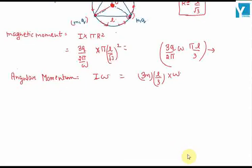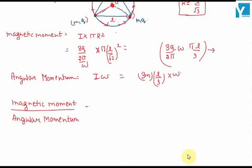If we find the ratio of magnetic moment and angular momentum, it equals 3Q omega L squared over 6, divided by 3m L squared omega over 3. If we cancel the terms, L gets cancelled, pi gets cancelled, 3 gets cancelled, omega gets cancelled. So the ratio will be q by 2m.